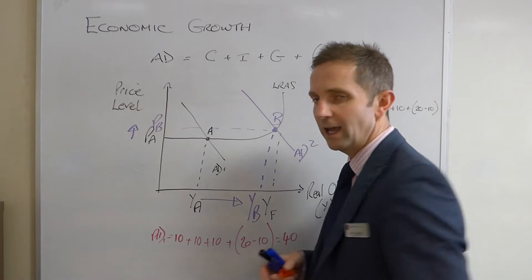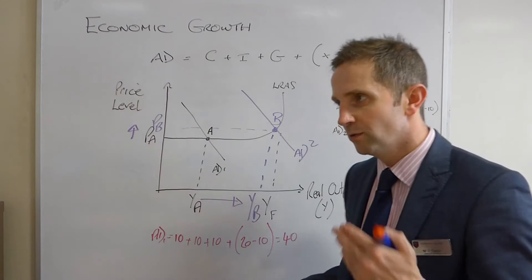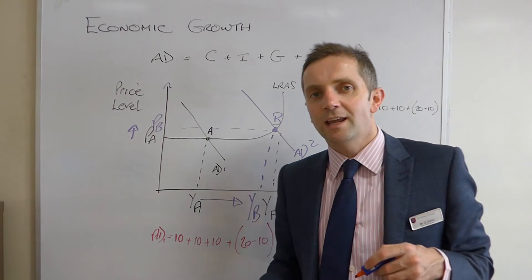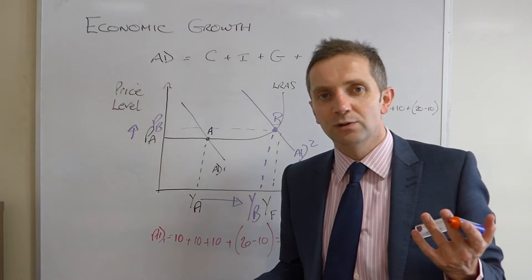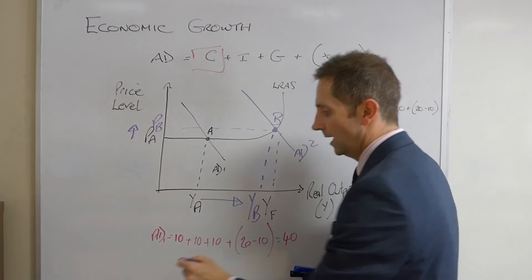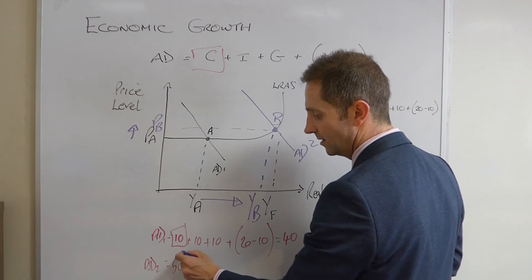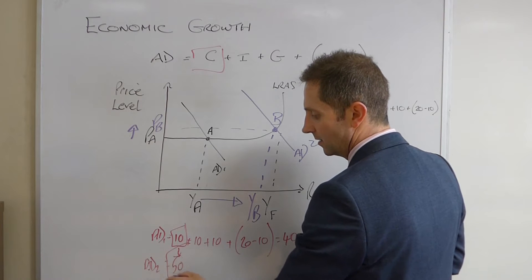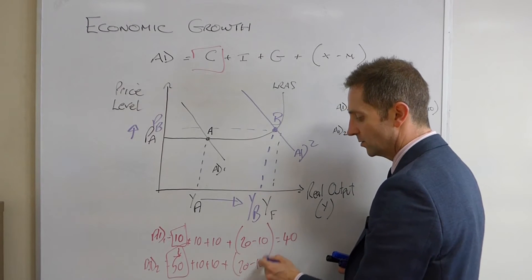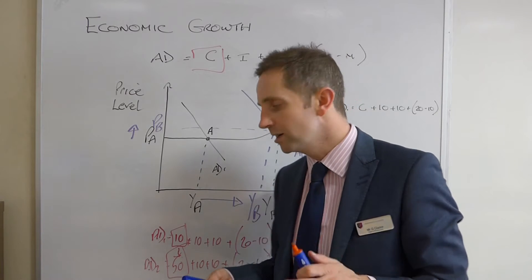So, he said AD1, for example, is equivalent to 40. Now, that could be 40 million, 40 billion, whatever it is. Then he said, right, now I'm going to say that the government engineers somehow, they engineer an increase in the level of C. And so, now I'm going to say that AD2 is equal to 50. So, it's gone from 10 to 50, plus 10, plus 10, plus 20 minus 10. So, all of the things remaining equal, you'll be familiar with that notion, Ceteris Paribus.